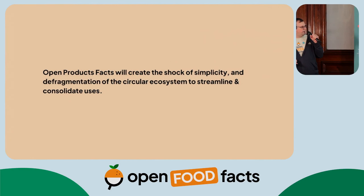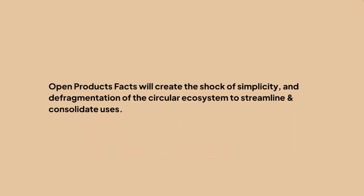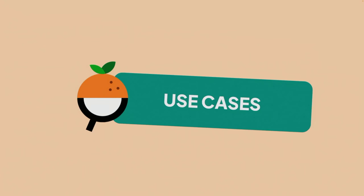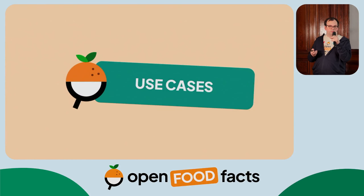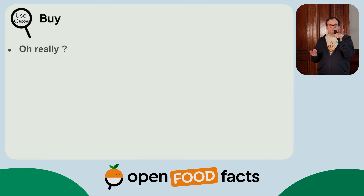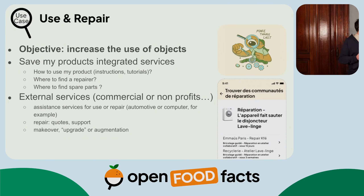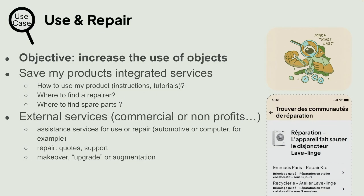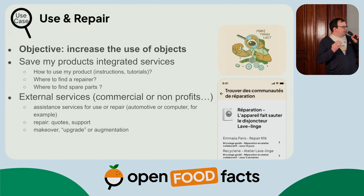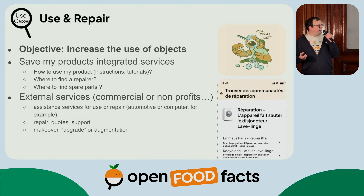So the circular fragmentation is something we want to try and tackle with Open Product Facts and consolidate circular usages. There are a bunch of use cases that probably are already emerging in your mind. So buy — we could go for buy, buy new stuff, buy more new stuff. So this is definitely something we'll do at some point, perhaps put scores. But probably a more interesting use case is use and repair — being able to increase the use of objects by finding spare parts, finding someone who's able to repair the product. And we are not going to do that ourselves; it's also about finding what's already out there and trying to normalize it so that you can, regardless of the country or the object, have a good experience.